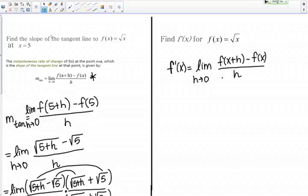They're nearly identical, except that instead of finding the tangent line at a specific point at x equals a, I'm finding it for any x in general. I'll replace the a by an x in the definition.